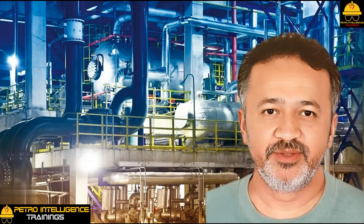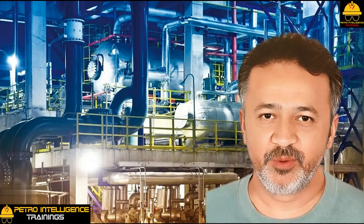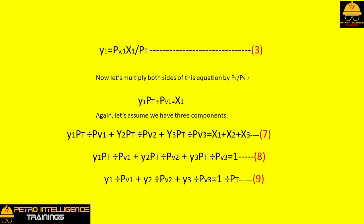Dew point calculations: we will now derive the dew point equation from the same basic statement of vapor-liquid equilibrium starting within the previous section. y1 equals PV1 x1 divided by PT. Now let's multiply both sides of this equation by PT slash PV1. We will get y1 PT divided by PV1 equals x1. Again, let's assume we have three components.